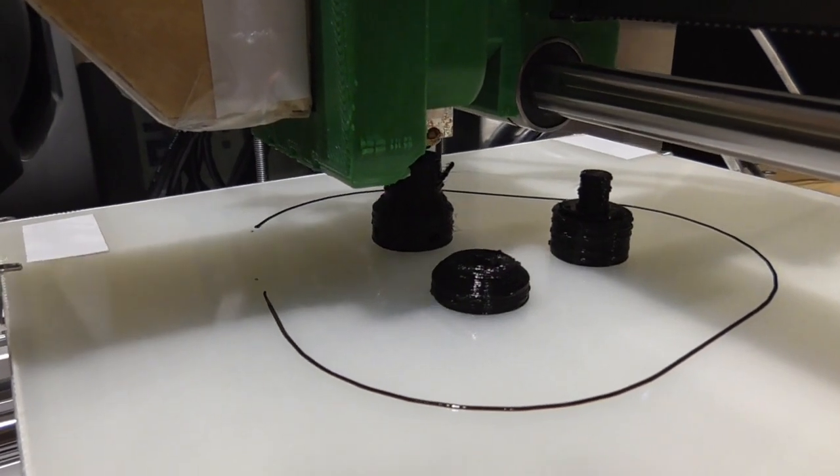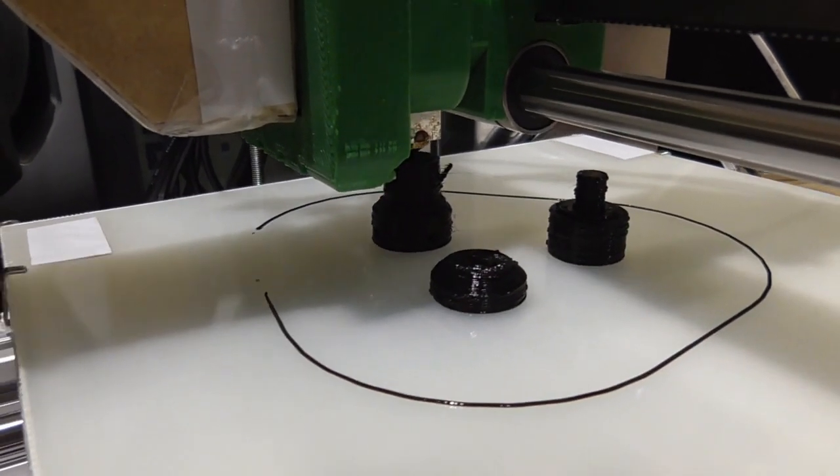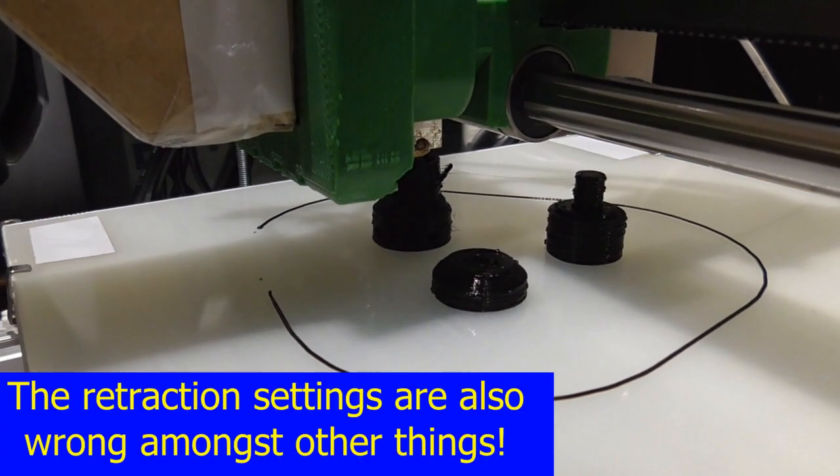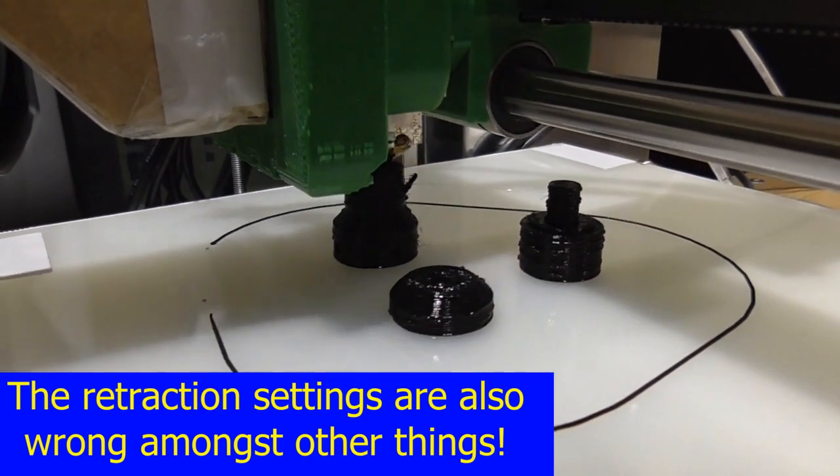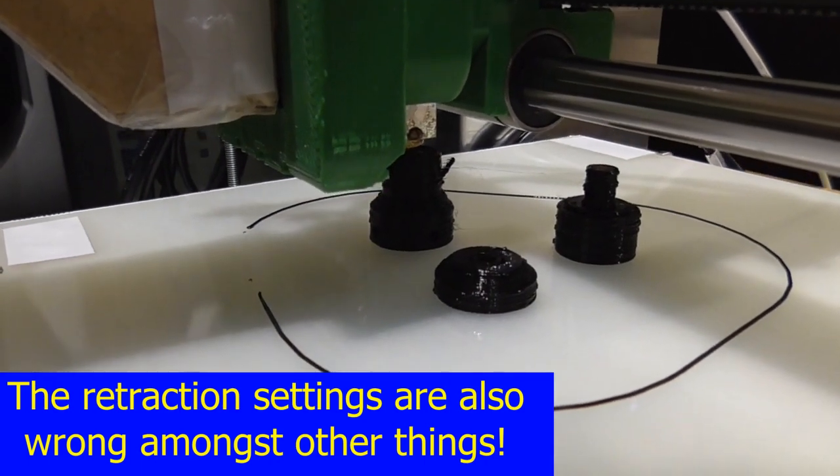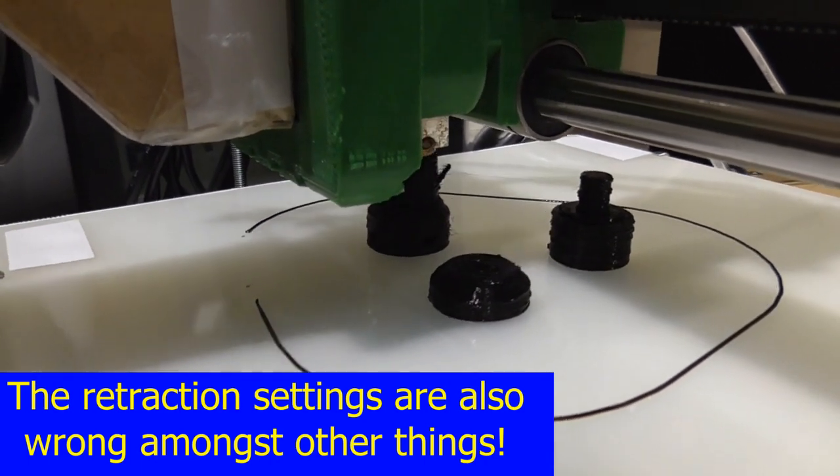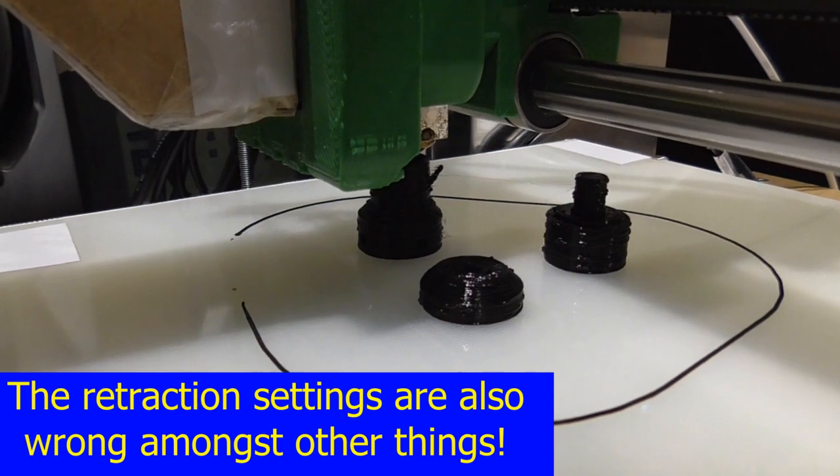Now if you're wondering why the prints look a bit rough it's because there's no parts cooling fan. I printed all three parts together so that the printhead would have to move between all three parts in one layer, however of course the tallest part ends up getting printed on its own.